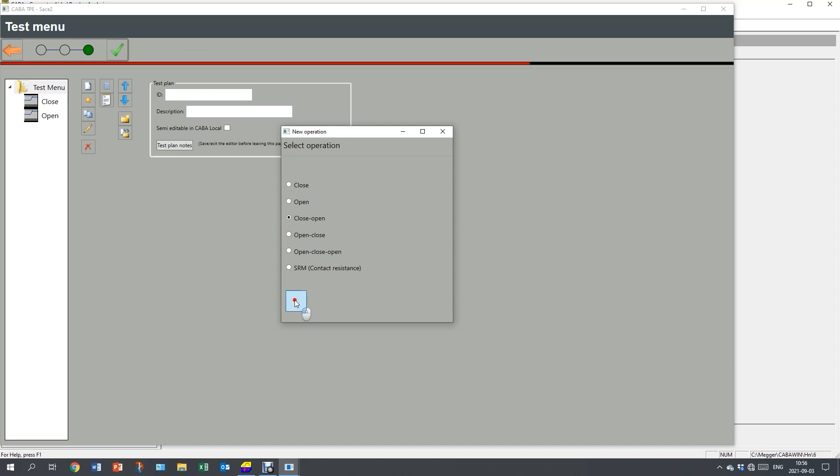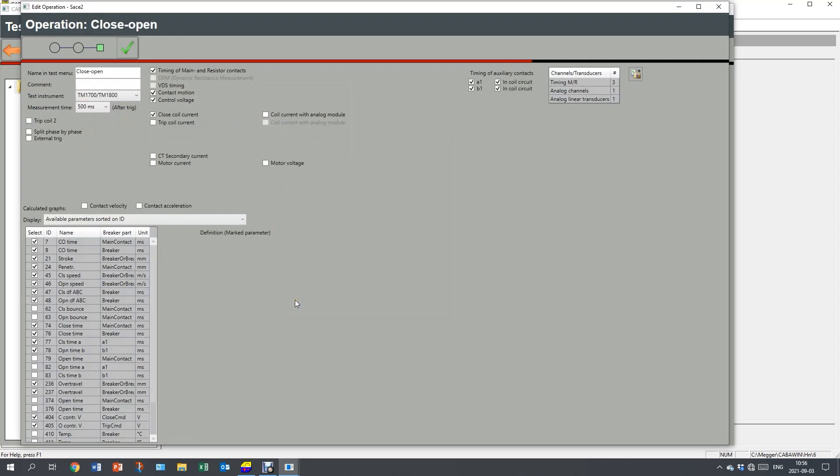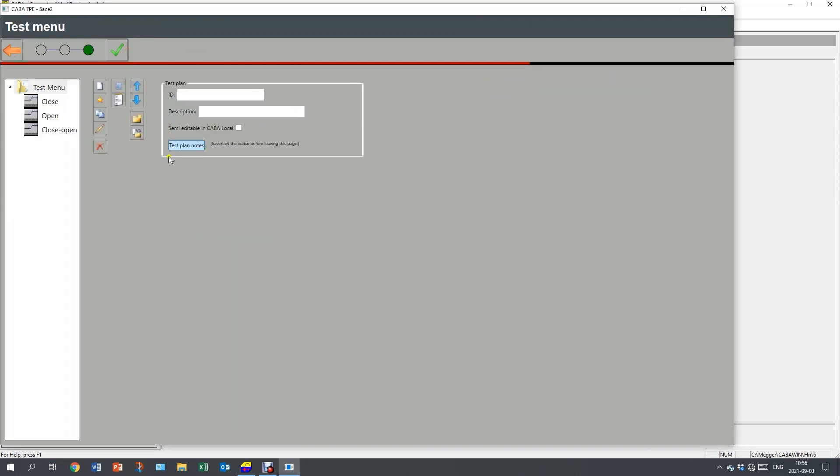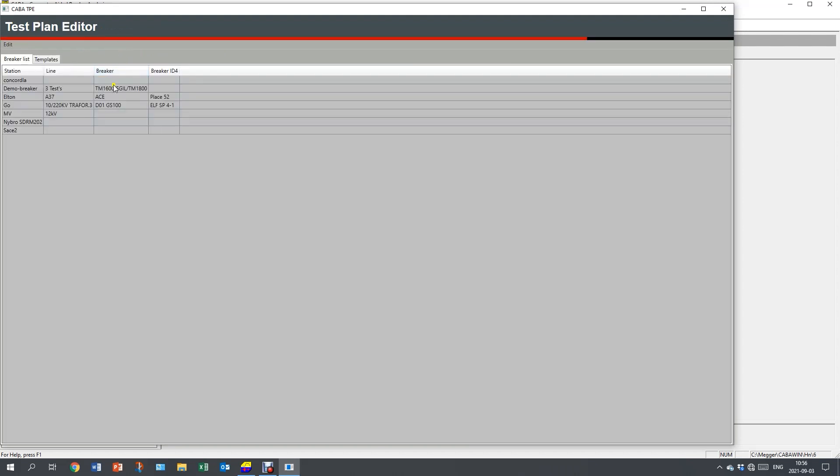And I continue and also prepare for a close open operation. This operation I'm not going to do today, but this is a normal setup. Here I don't want to measure my auxiliary contacts during the multiple operation. With that, now I have prepared my breaker and I can leave the test plan editor to continue.